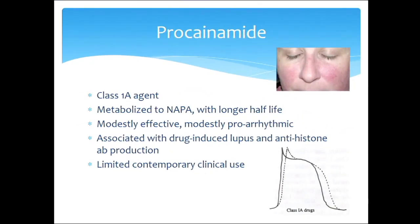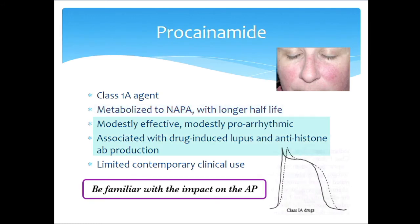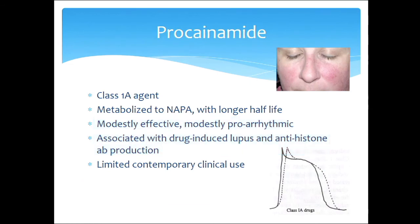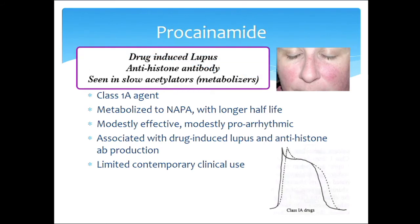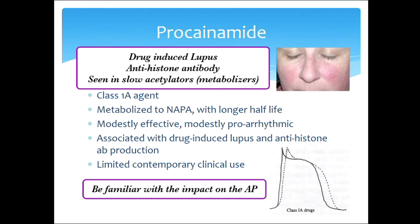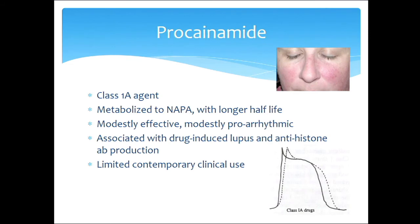Procainamide is a class 1A agent — largely a sodium-blocking drug. It is metabolized to a metabolite called NAPA, which has a longer half-life than plain procainamide. Procainamide is modestly effective and modestly proarrhythmic — just a modest agent. Interestingly, it is associated with drug-induced lupus, including malar rash and antihistone antibody production. These are the key details to know, as you might be asked about a patient with atrial fibrillation or ventricular tachycardia who gets treated and then develops lupus. Procainamide is almost never used in contemporary clinical practice.